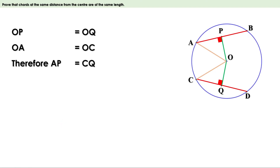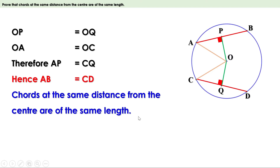We know the perpendicular from the center to a chord bisects the chord. Therefore AP is half of AB. Similarly, CQ is half of CD. AP equals CQ means half AB equals half CD. When the halves are equal, AB and CD are also equal. That means chords at the same distance from the center are of the same length.